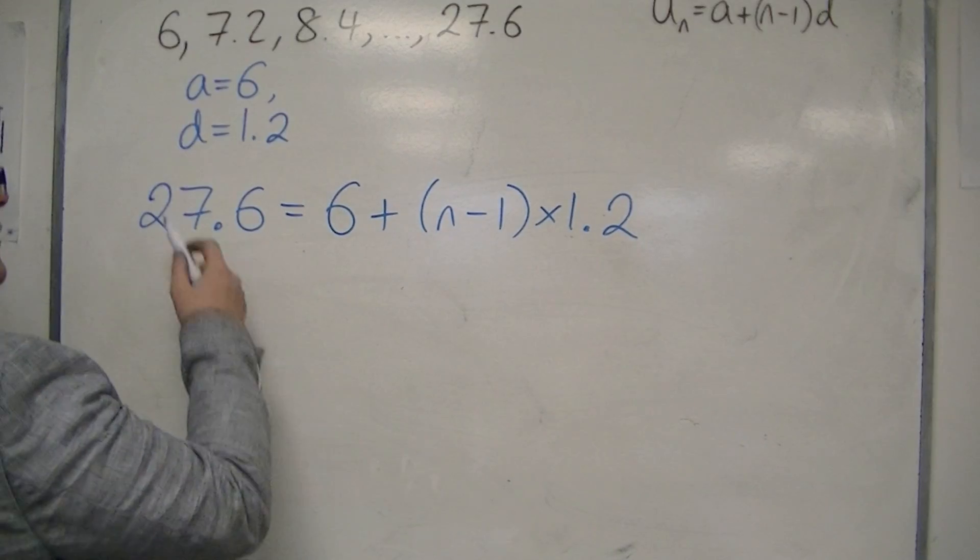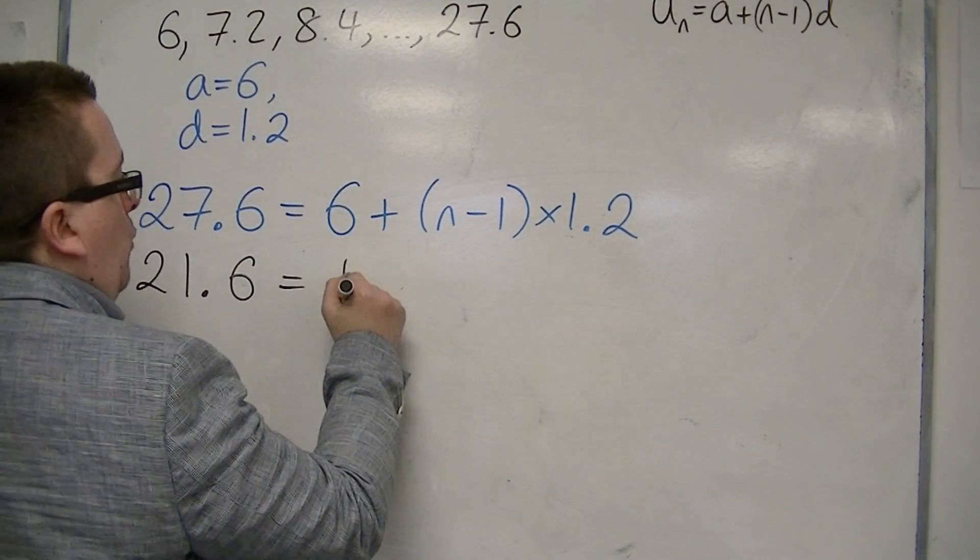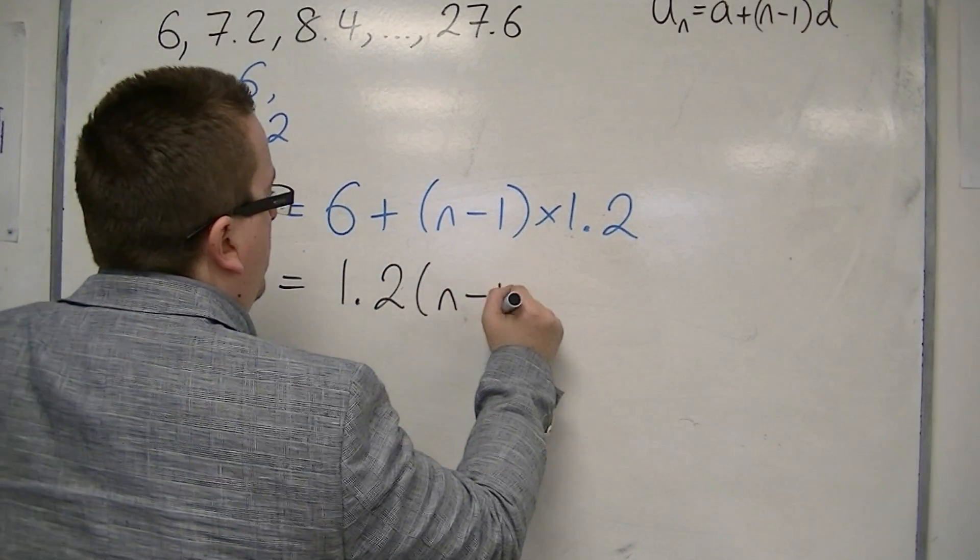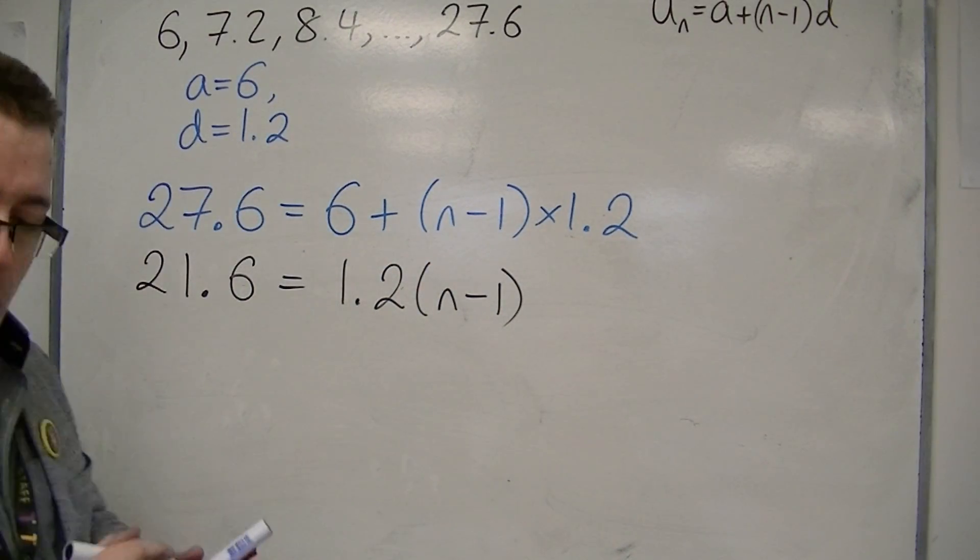If I take 6 from both sides, I've got 21.6 equals 1.2(n-1). Now if I divide both sides by 1.2, 21.6 divided by 1.2 is 18.